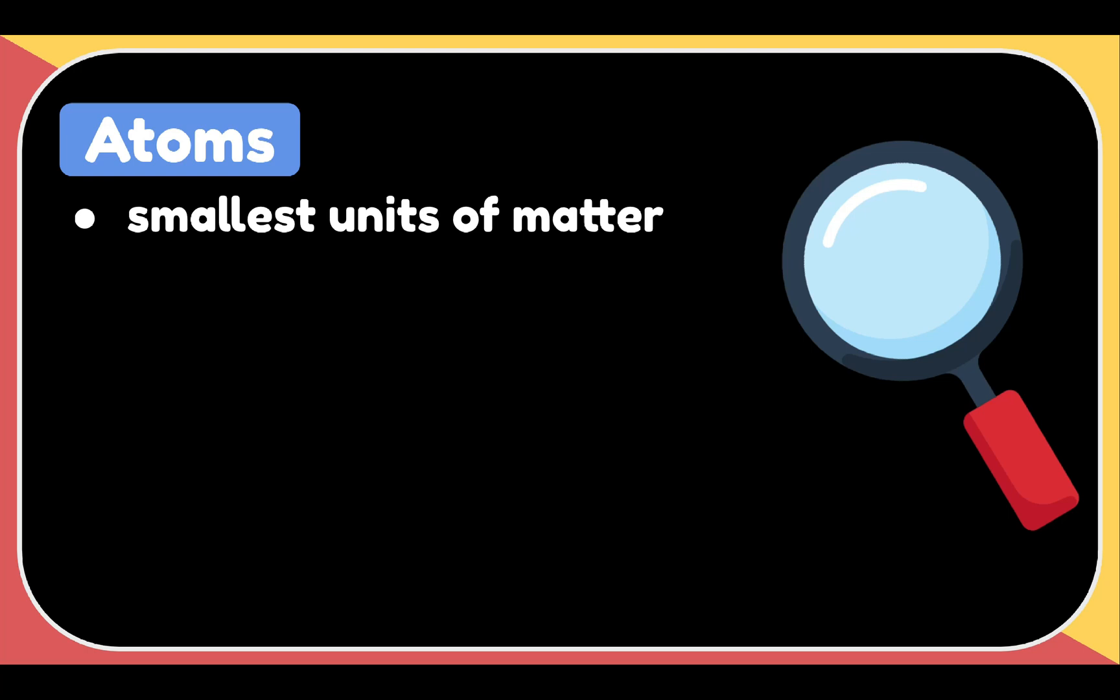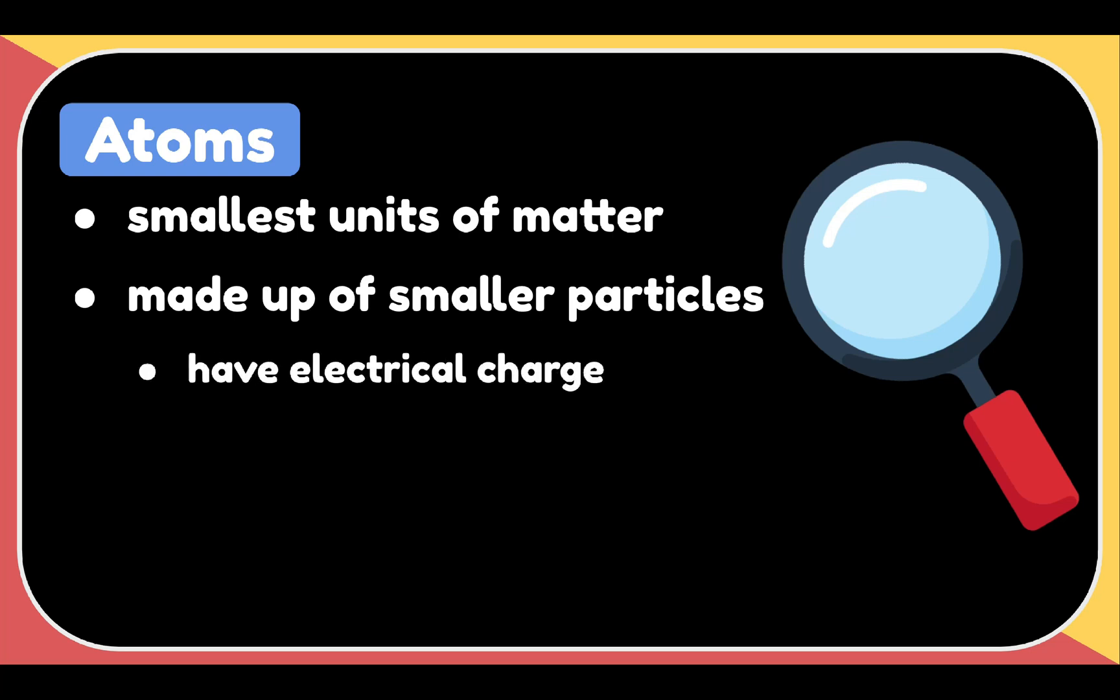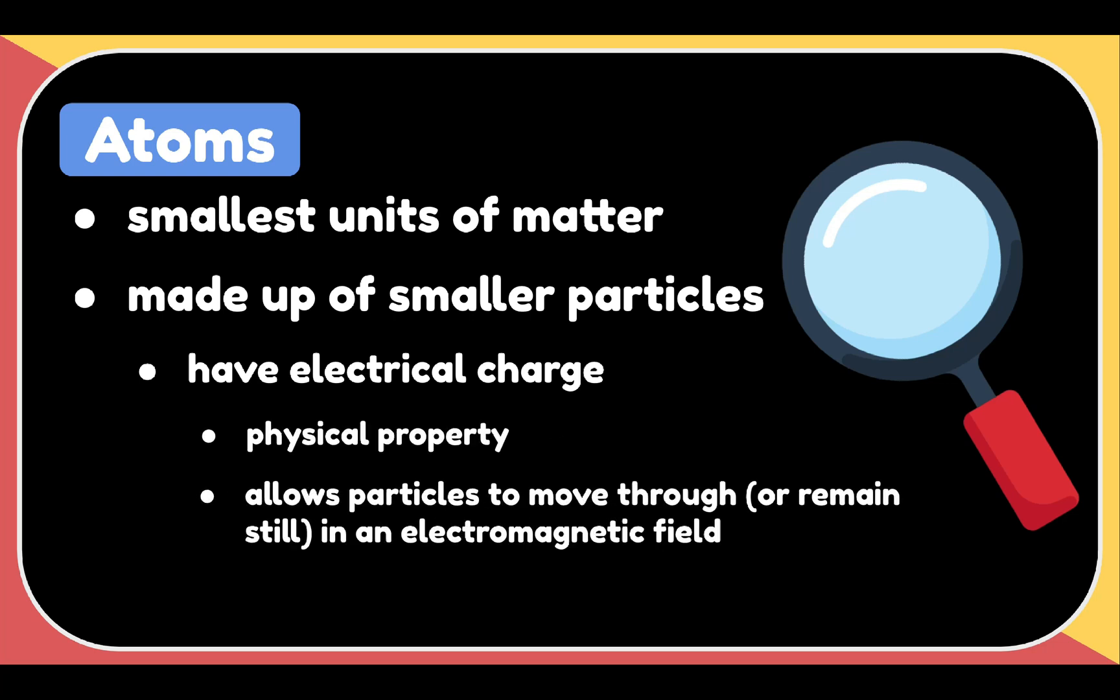And these are made up of smaller particles, and some of these particles have an electrical charge associated with it. So a charge is a physical property which allows the particles to move through or remain still in an electromagnetic field.